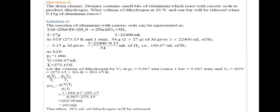Sixth question is: the drain cleaner Drain-X contains small bits of aluminum which reacts with caustic soda to produce dihydrogen. What volume of dihydrogen at 20 degrees centigrade and one bar will be released when 0.15 grams of aluminum reacts? So here we have first written the equation.